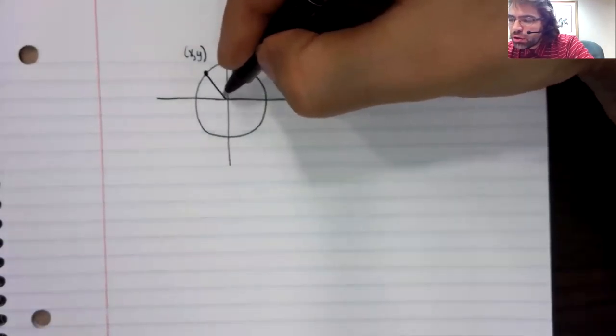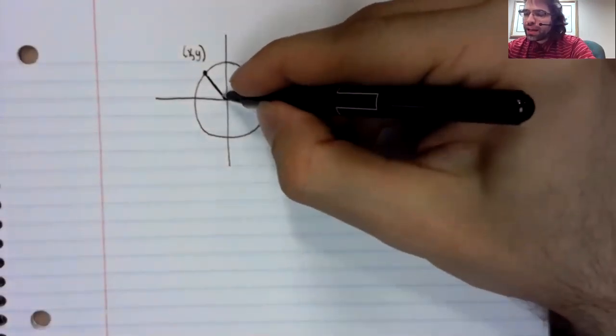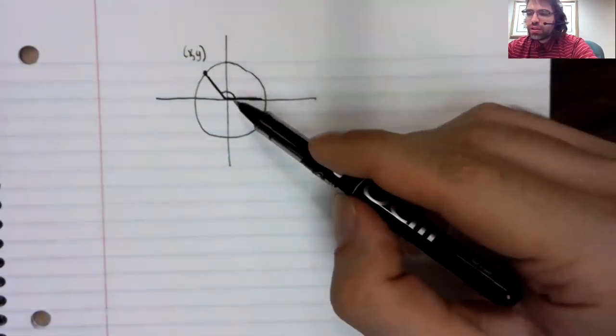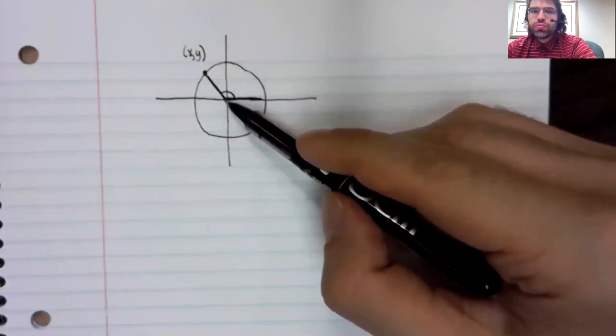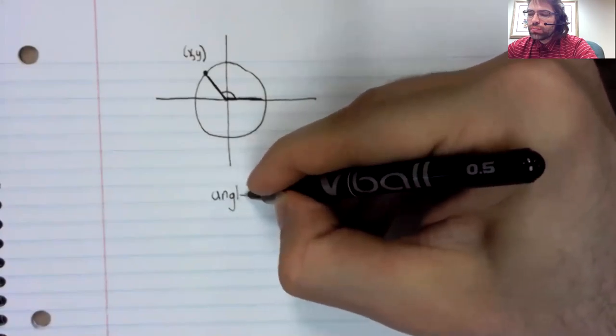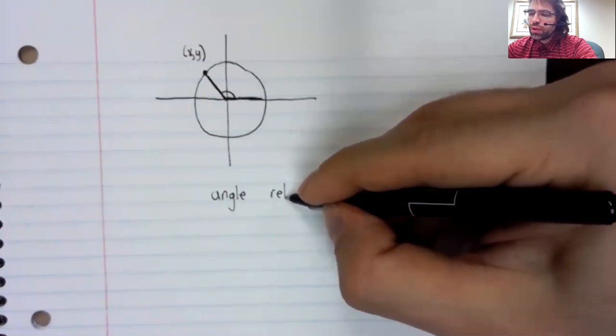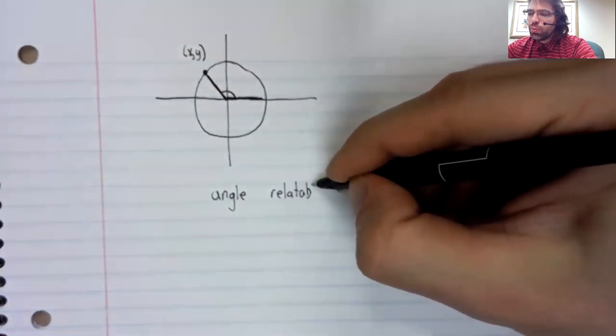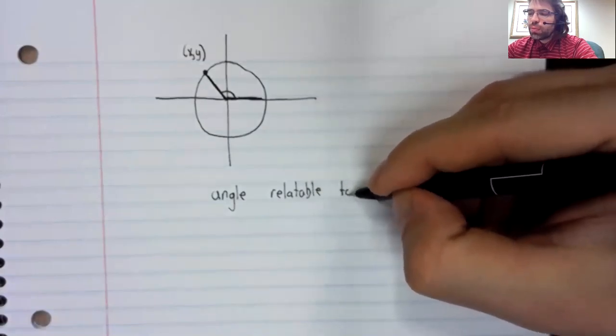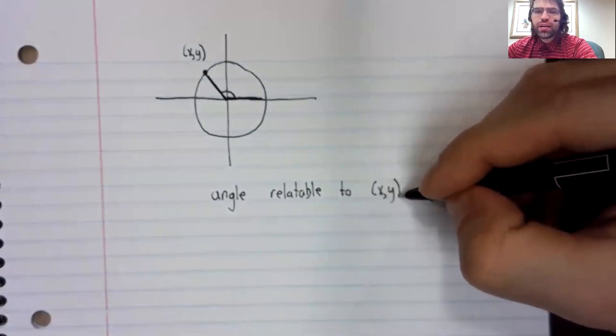But another way would be to say what this angle is. This angle also uniquely determines this point. So this angle here should be relatable in some way to this x, y pair.